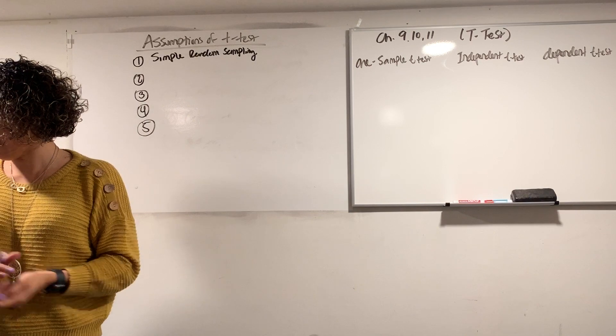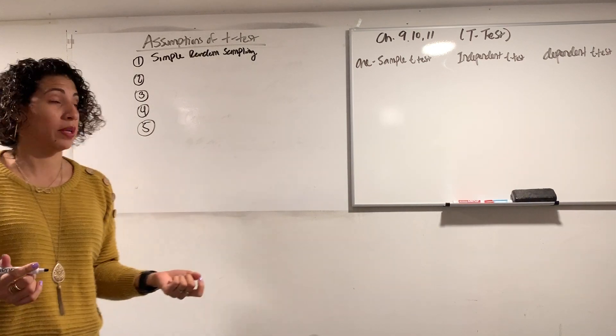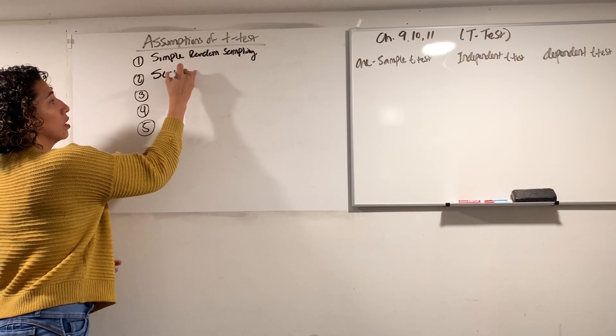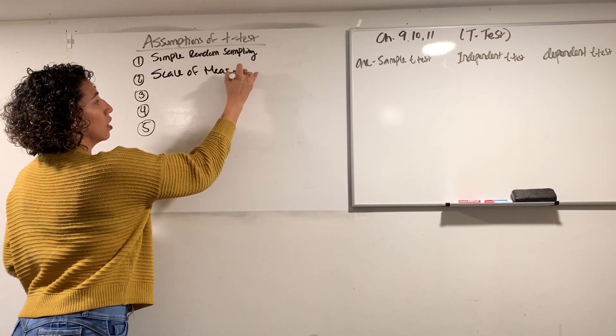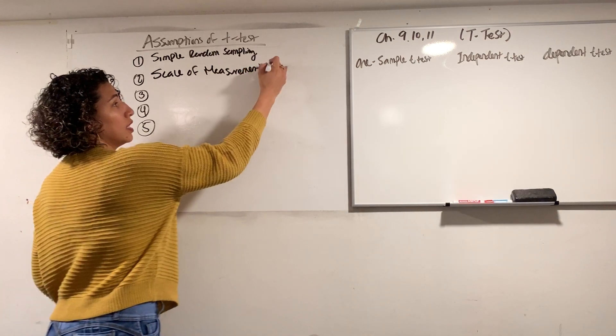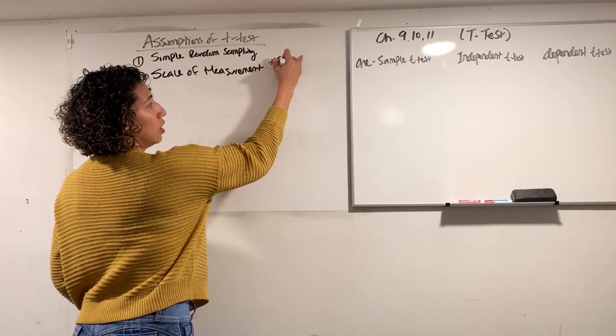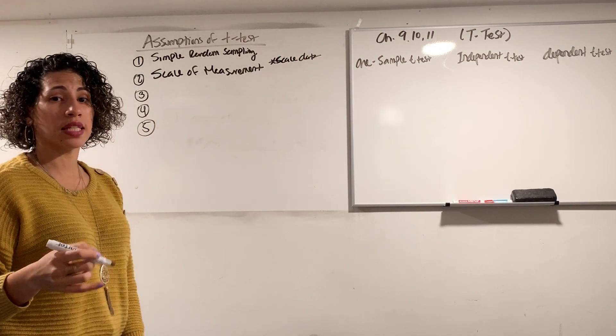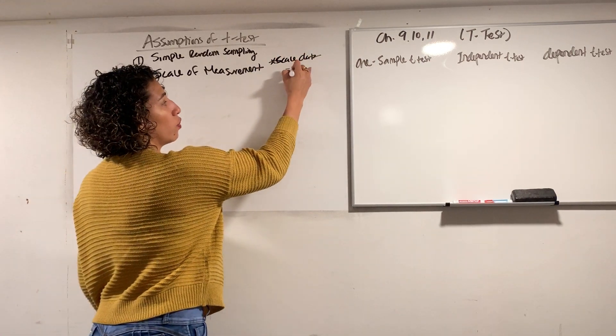We also have to keep in mind that we have the scale of measurement. So the scale of measurement has to do with the type of data we're using. In this instance, we're going to use scale data. The reason I call it scale is because if you use SPSS, it's basically interval or ratio data.